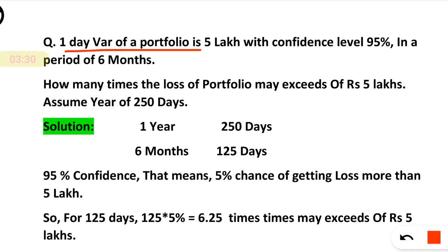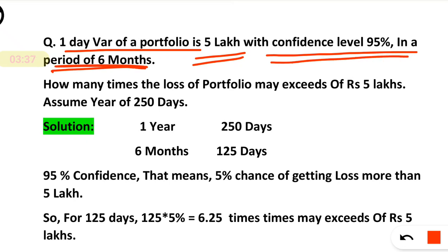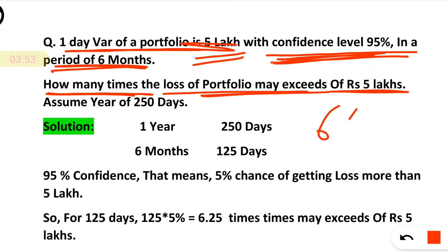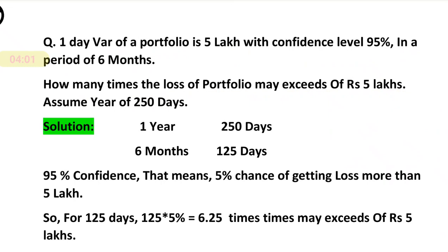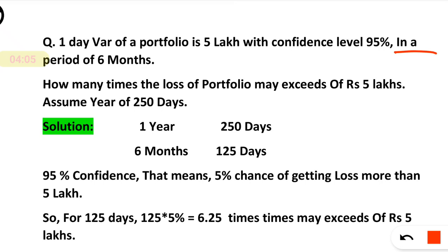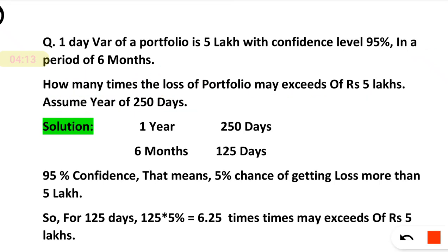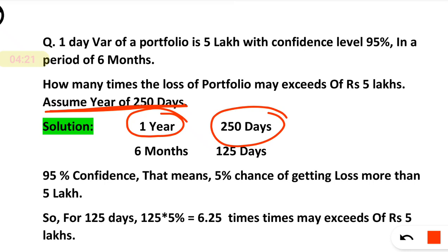One day VAR of a portfolio is 5 lakh rupees with a confidence level of 95%. In the period of 6 months, they are asking how many times the loss of the portfolio may exceed 5 lakh rupees. We have to assume 250 days a year. In VAR calculation, if it is not mentioned, take 250 days as one year. So for one year it is 250 days. 6 months means obviously it will be 125 days.